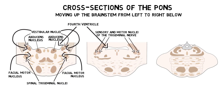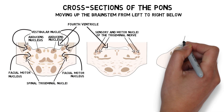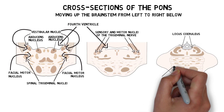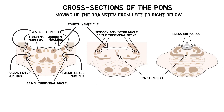The pons also contains the locus coeruleus, the largest collection of norepinephrine-containing neurons in the brain, and some of the raphe nuclei, the major serotonin-producing neurons of the brain.